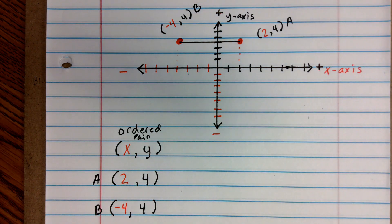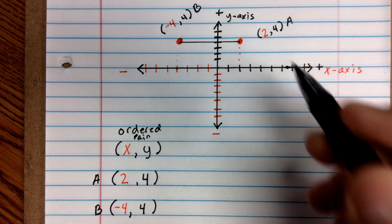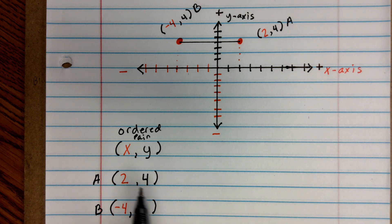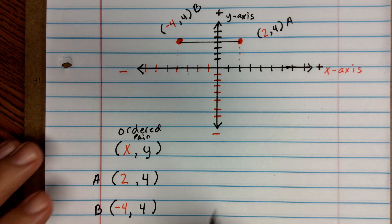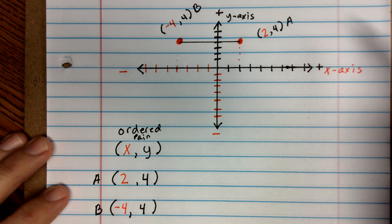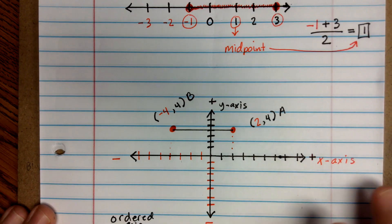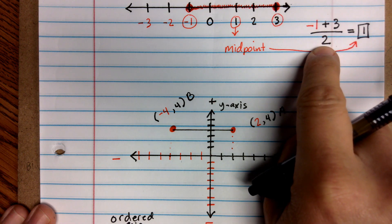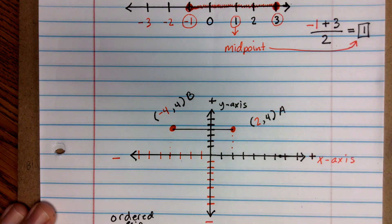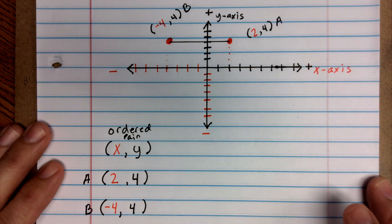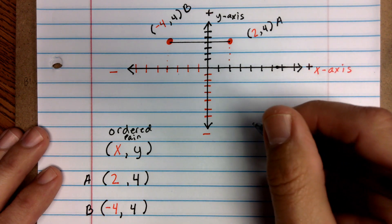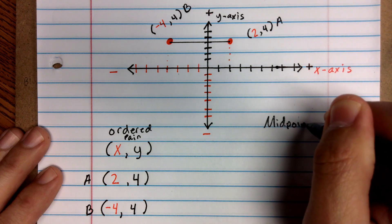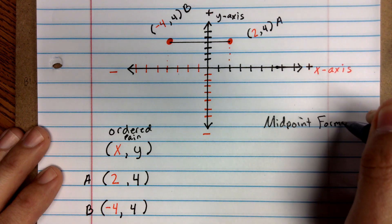Let's connect the two points to give a visual of what's happening. Your work won't have you plot and connect points — it will just give you ordered pairs and expect you to find a midpoint. Just like the number line approach, you take the beginning point and ending point, add them together, and divide by two to get the midpoint. I'm going to write the midpoint formula for you.